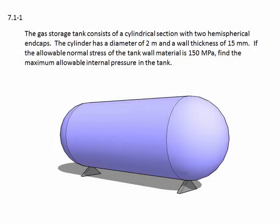Problem 7.1-1. The gas storage tank consists of a cylindrical section with two hemispherical endcaps. The cylinder has a diameter of 2 meters and a wall thickness of 15 millimeters.